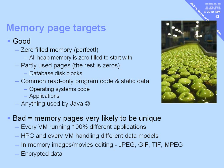There are also some bad memory pages for deduplication. If every virtual machine is running completely different applications, there may not be high deduplication. High-performance workloads where everyone uses different data models — one modeling a car crash, another modeling the weather — will have very little in common. Things like movies and images being edited will be completely different, perhaps being served by an Apache web server. Encrypted data is another example where every memory page will be very different.